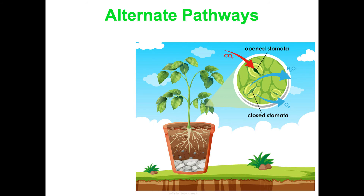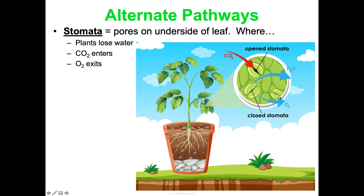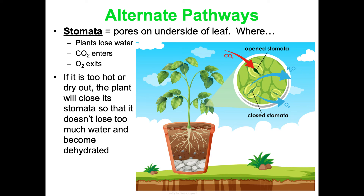One last thing: alternative pathways. Stomata are pores on the underside of leaves. Plants lose excess water through the stomata in a process called transpiration — we'll talk about that more in ecology when we cover the water cycle. Through the stomata, carbon dioxide goes in as an ingredient for photosynthesis, and oxygen goes out as it's produced. If it's too hot or dry, the plant closes its stomata so it doesn't lose too much water, but that eliminates gas exchange — CO2 can't get in, and oxygen can't get out.